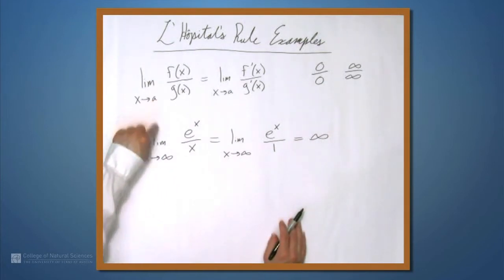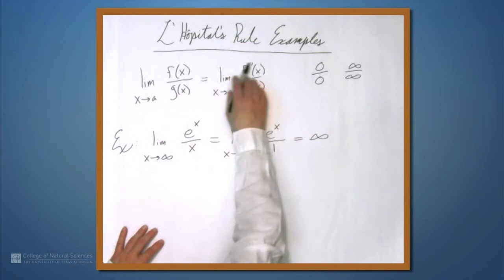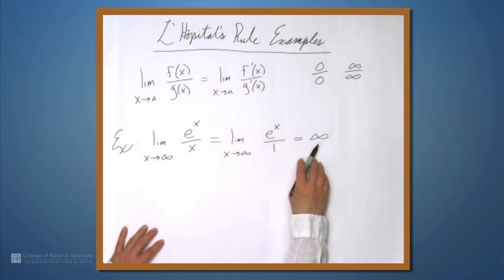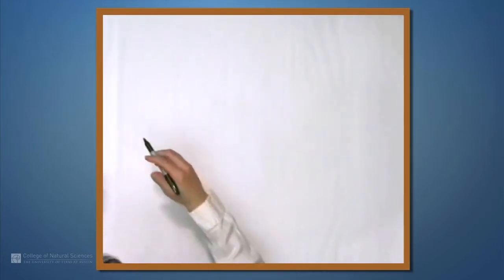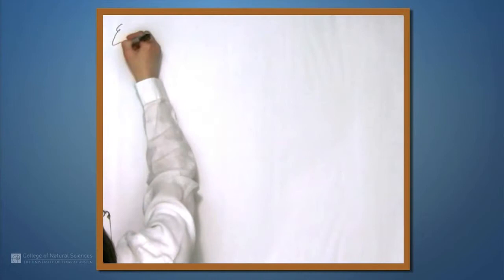So just as a could be infinity, another thing, when I said this limit has to exist, here I'm also including the case where that limit is infinity or minus infinity. So let's look at another example that we already know how to deal with in another way.